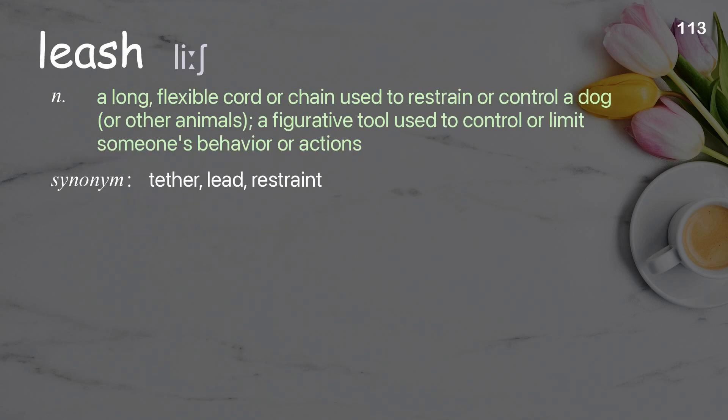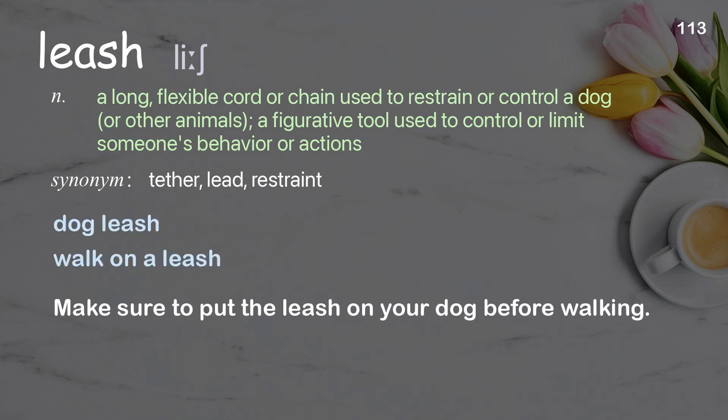Leash: a long, flexible cord or chain used to restrain or control a dog or other animals; a figurative tool used to control or limit someone's behavior or actions. Examples: dog leash, walk on a leash. Make sure to put the leash on your dog before walking.